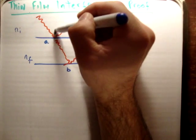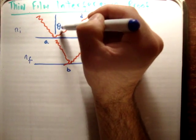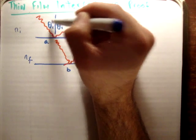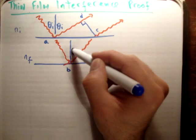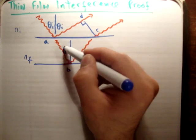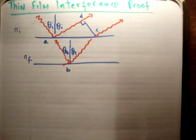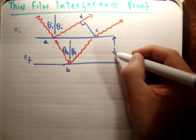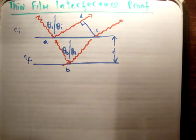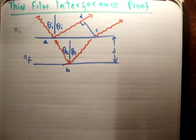And if we look closely, we have theta initial and we have theta transmitted. I'm going to define this distance here as d. Please don't get it confused with the point d.